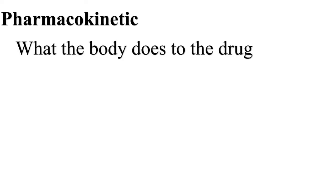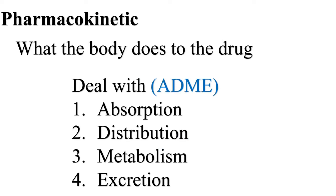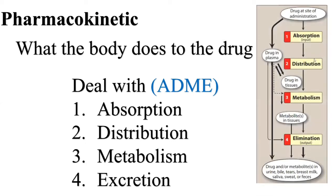Now we will learn about pharmacokinetics — what the body does to the drug, meaning how our body handles drugs after administration. The drugs undergo many changes in our body. This is summarized by the acronym ADME: A for absorption, D for distribution, M for metabolism, and E for excretion.